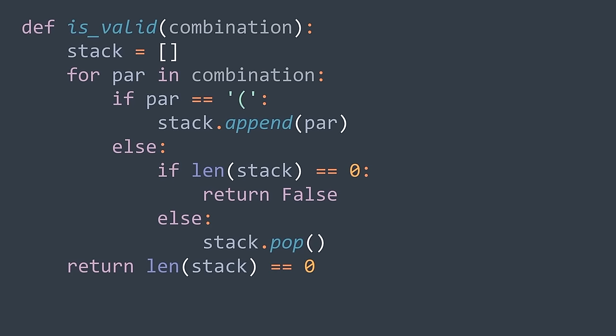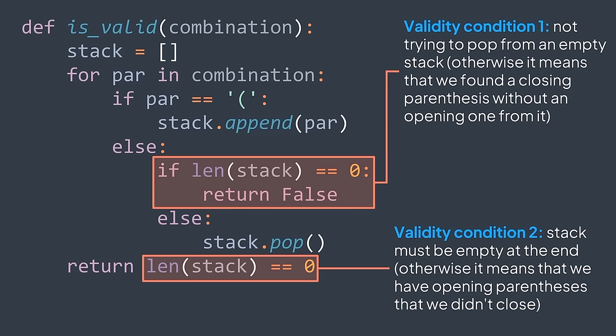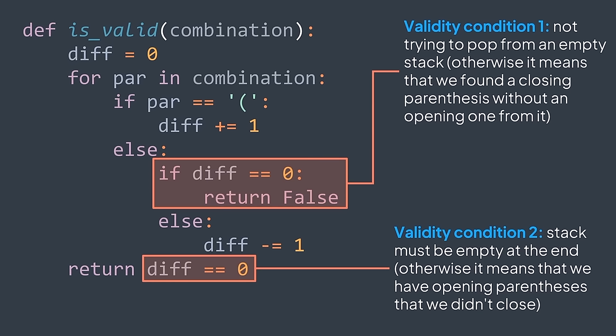To check if a combination is valid, we maintain a variable 'diff' representing the difference between the number of opening and closing parentheses. It has to be zero at the end, and if it becomes negative during the process, the combination is not valid. We use backtracking because at each step of building the combination, we have two possibilities: adding an opening parenthesis (increment diff) or adding a closing one (decrement diff). We try both. And when diff becomes negative, we backtrack — we know the actual branch won't lead to a valid solution.